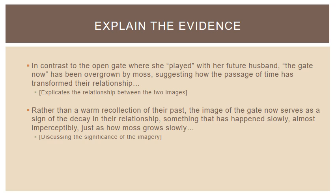After discussing that first image, we would say something like: "In contrast to the open gate where she played with her future husband, 'the gate now' has been overgrown by moss, suggesting how the passage of time has transformed their relationship." Notice how I began the sentence with "in contrast" — that very clearly sets up the relationship between this quotation and the other, as opposed to just saying she played by it and then the gate had moss on it, which is simply telling me what's in the poem. By putting "in contrast," it suggests the relationship between the images.